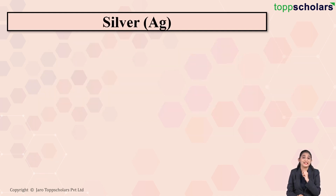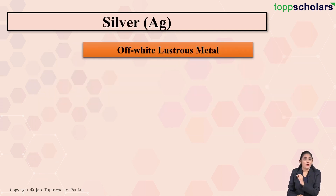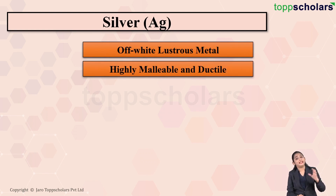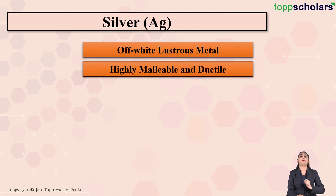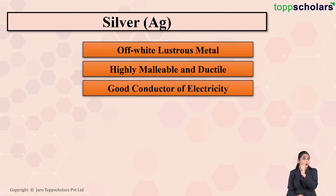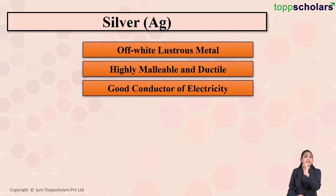Now let's move on to silver. Silver is an off-white lustrous metal. Silver is highly malleable as well as ductile. Malleable means the property of a metal by which it can be beaten into sheets, and ductile means the property by which it can be drawn into wires. Silver is also a good conductor of electricity.